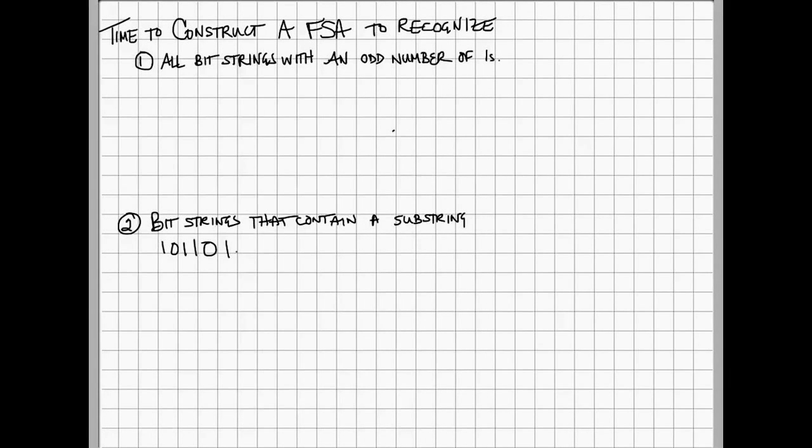Here we are in the home stretch. How did you do? If you wanted to construct a finite state automata so that it recognizes bit strings with an odd number of ones, I hope that you came up with something like this.